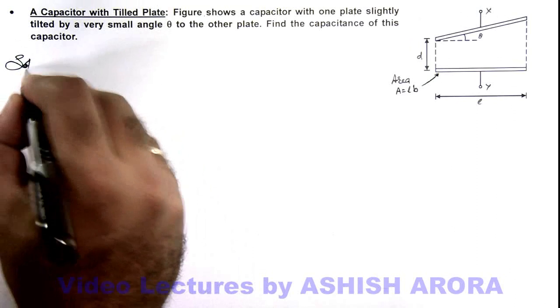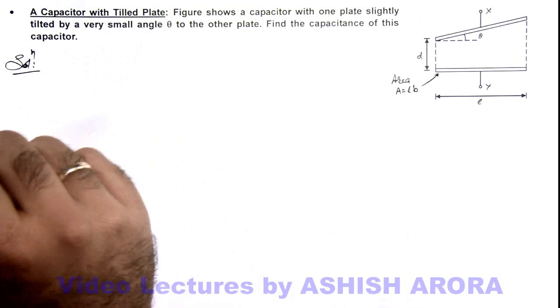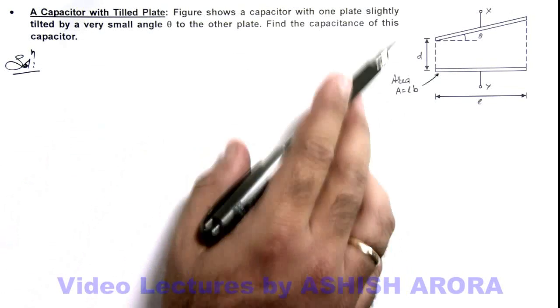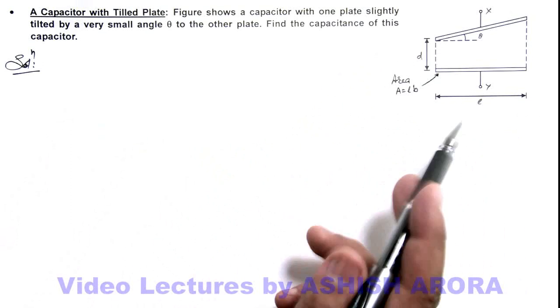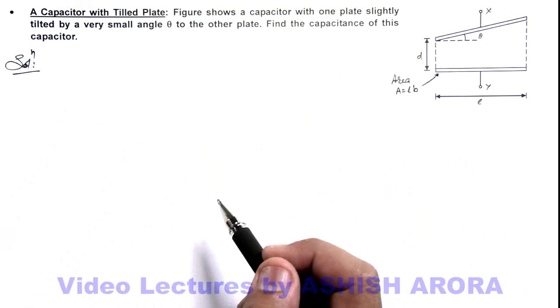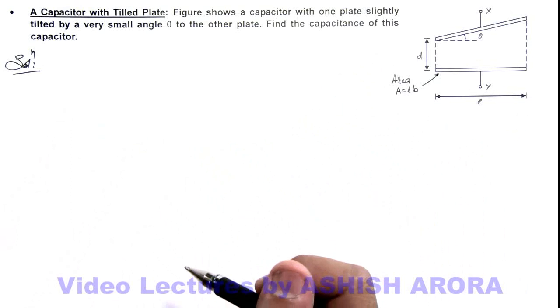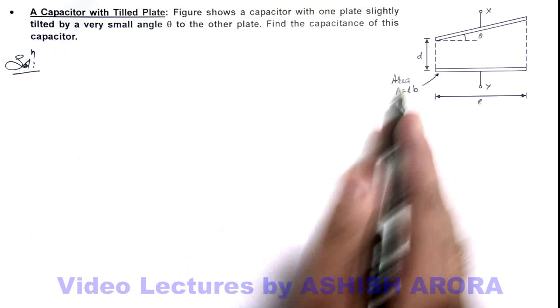Now, in this solution here we can see, as the parameter separation between the plates is varying along the length of the plate, we need to use the concept of variation of parameters. So we need to consider an elemental capacitance in between the two plates.